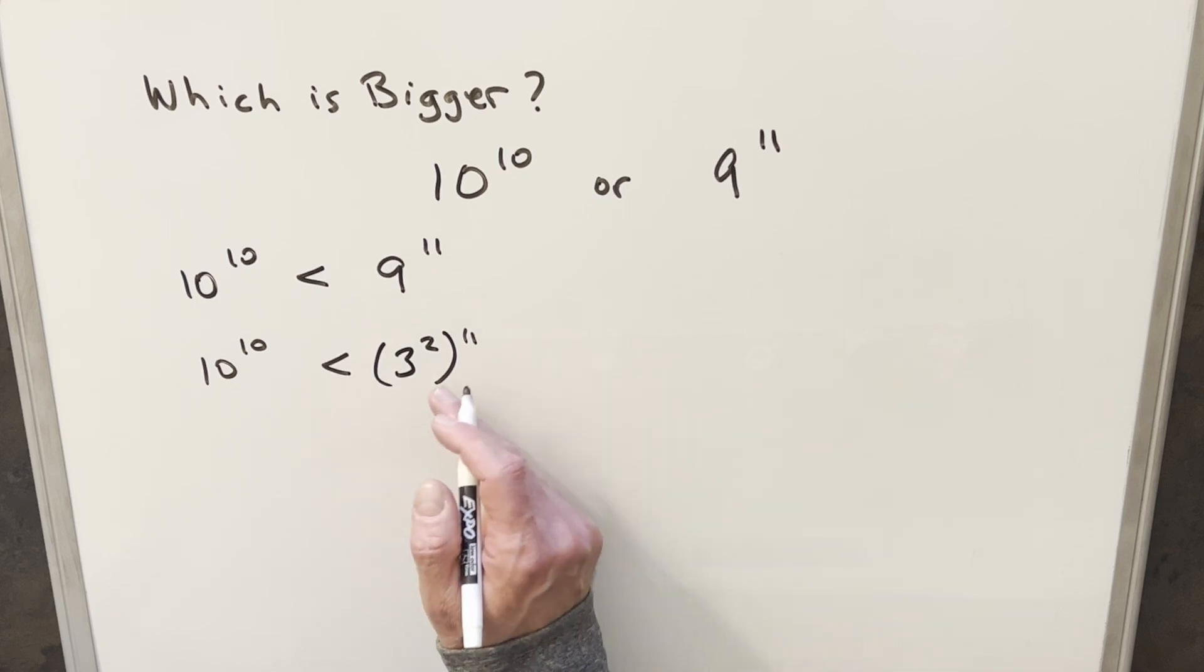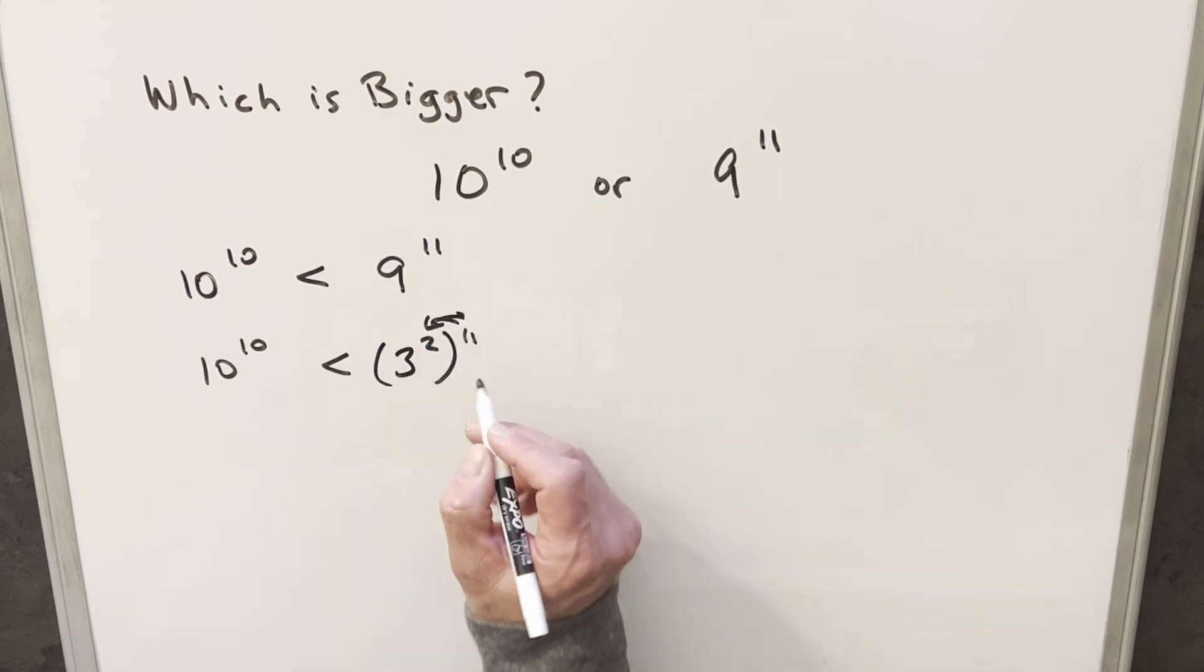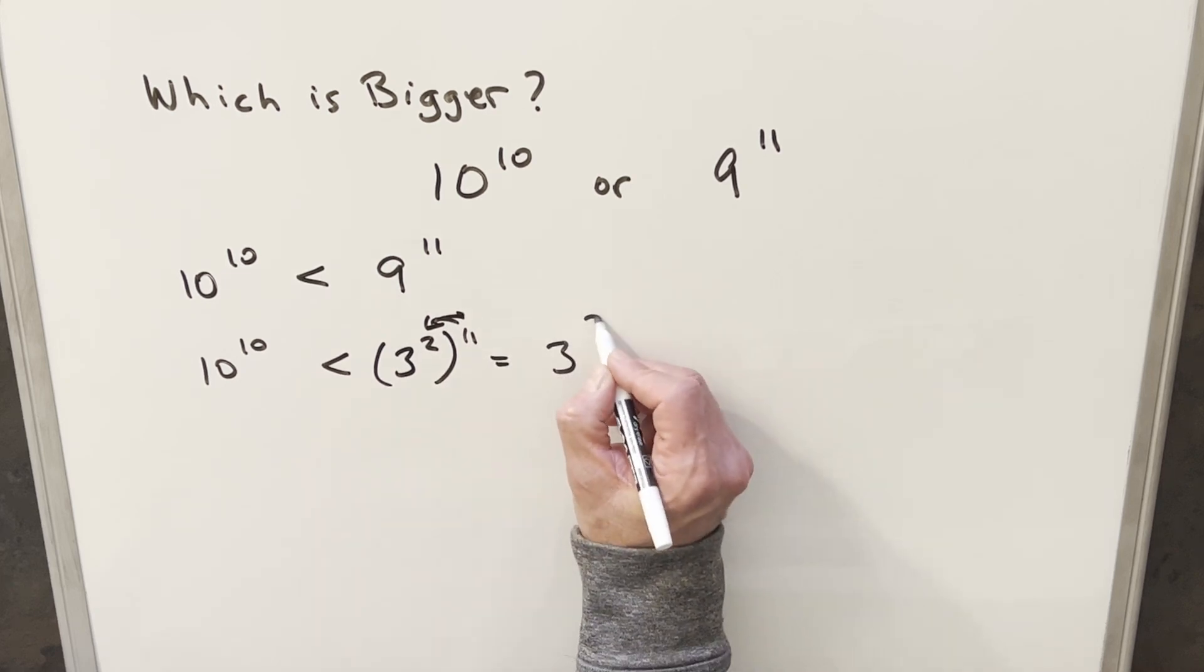Now 3 squared to the 11th, I can distribute in, actually go this way, distribute in the 11, and then I can actually rewrite this as 3 to the 22.